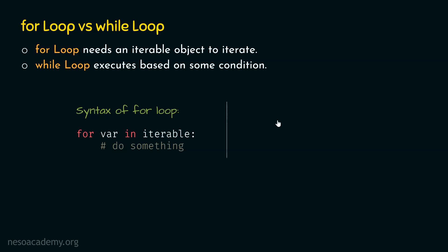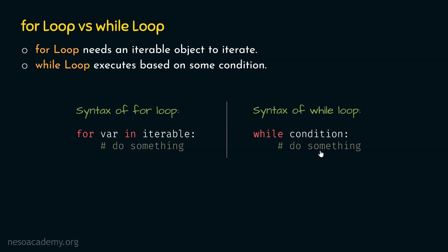On the other hand, the syntax of while loop looks like this: while condition, do something. These statements will be executed based on the condition we provide. If the condition is true, then the statements inside while loop will be executed. If the condition is false, then the loop terminates. We can understand the difference between for loop and while loop from these two syntaxes — here we need to provide an iterable object, and here we need to provide a condition.